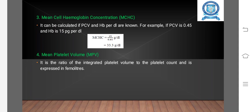Mean Cell Hemoglobin Concentration (MCHC): It can be calculated from the PCV and Hb per liter of blood. For example, if PCV is 0.45 and Hb is 15 per deciliter.